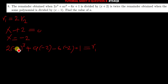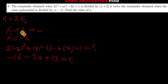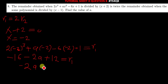Simplifying: 2 times negative 8 gives us negative 16, then we have minus 2a, then minus 6 times negative 2 gives us plus 12, equal to r1. So negative 16 plus 12 gives us negative 4, so r1 equals negative 2a minus 4. This is our first equation.